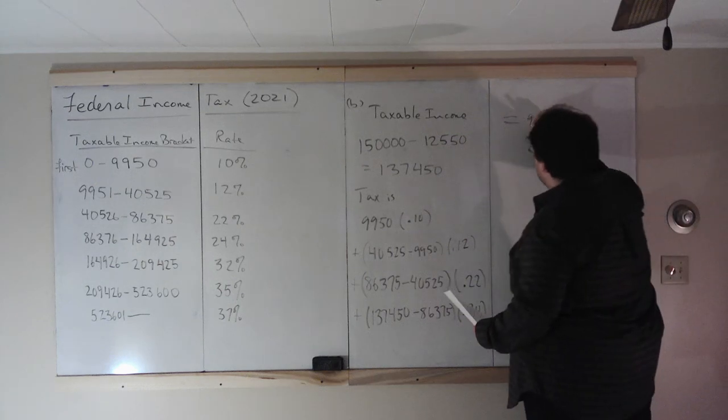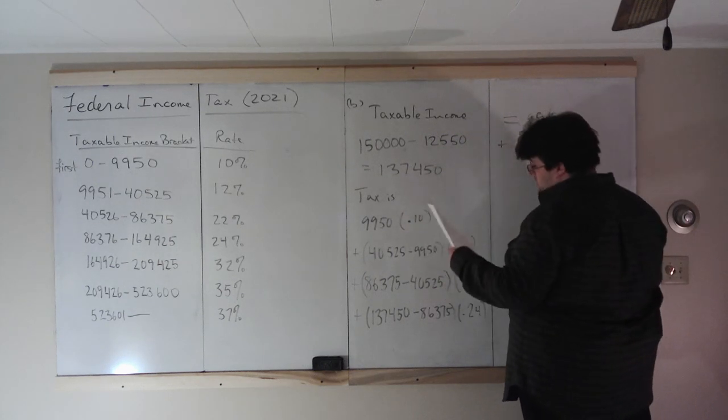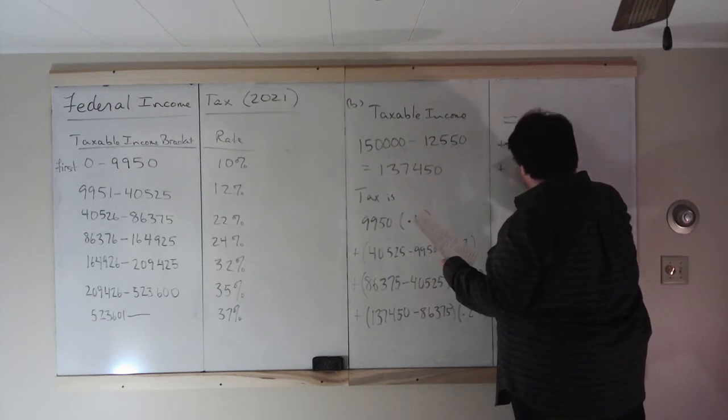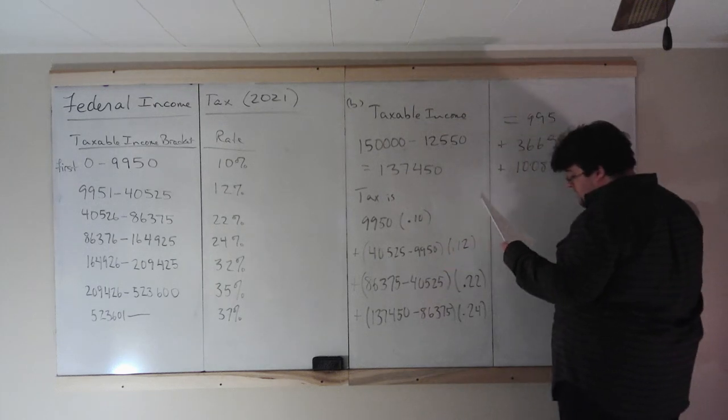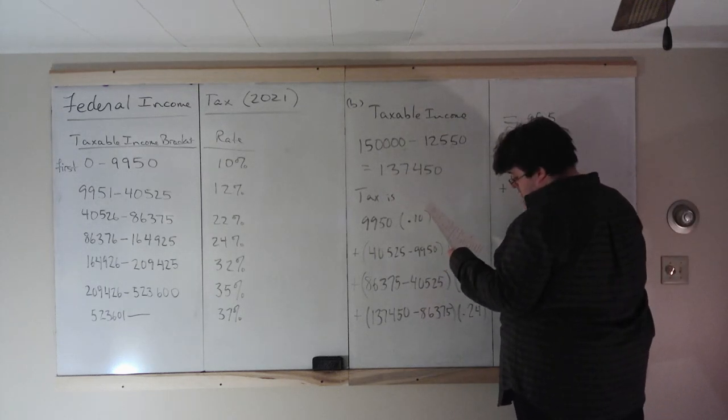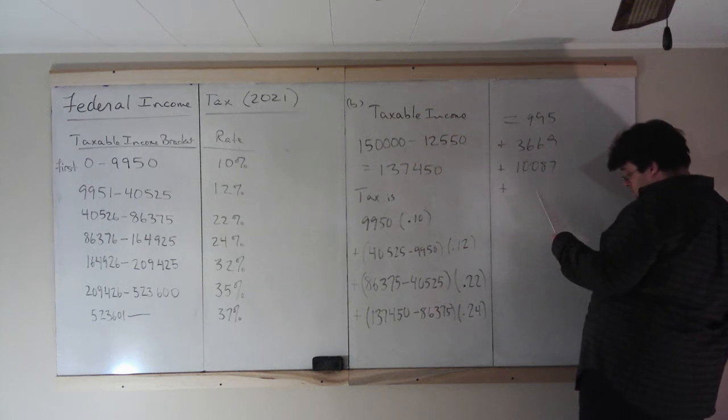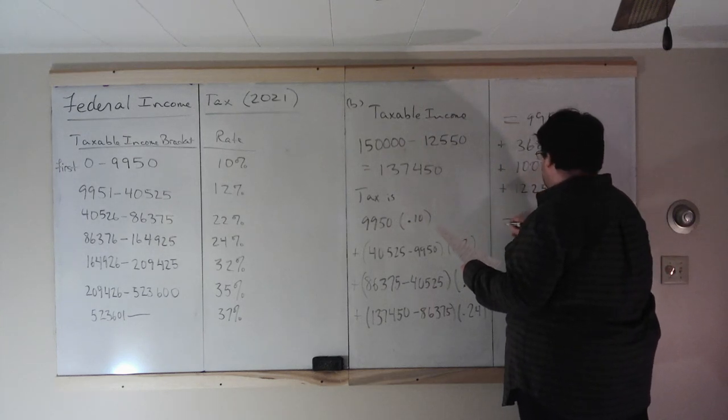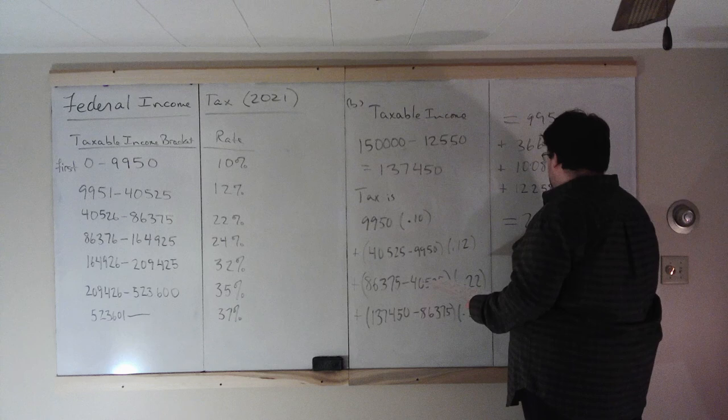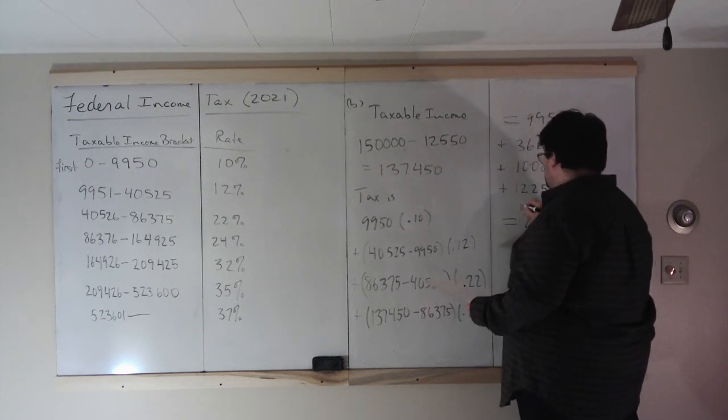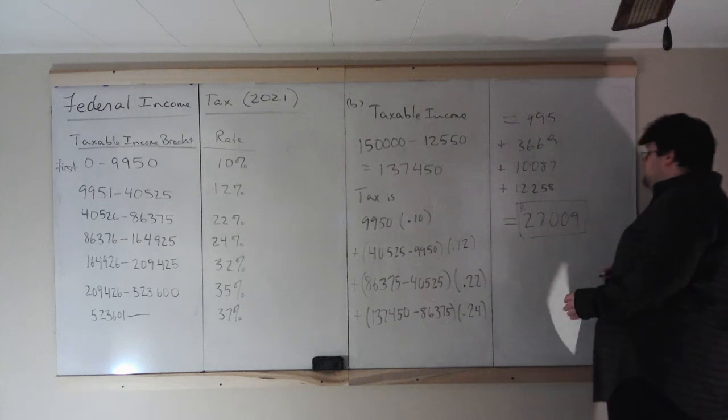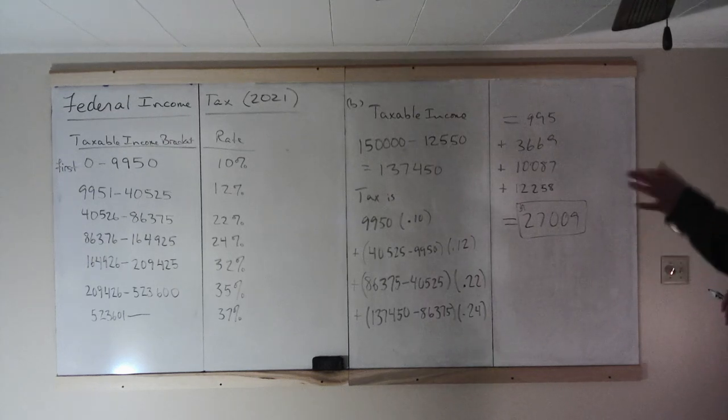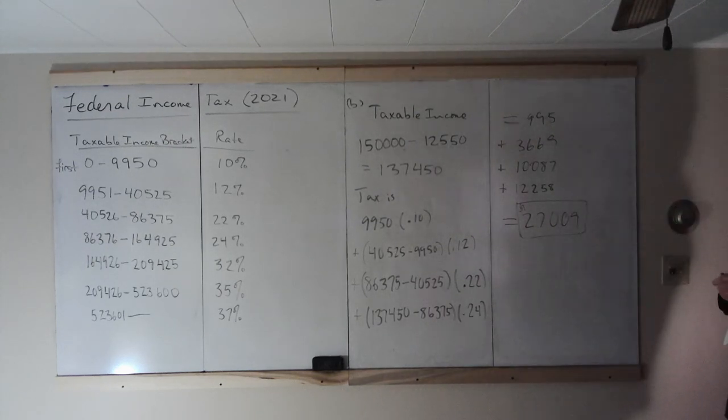And what does this equal? Well, it equals $995 plus $3,669 plus $10,087 plus $12,258, and that equals $27,009. So it does follow the same thing as the first one, the same process as the first, but we have to go across four brackets instead of just across the first two.